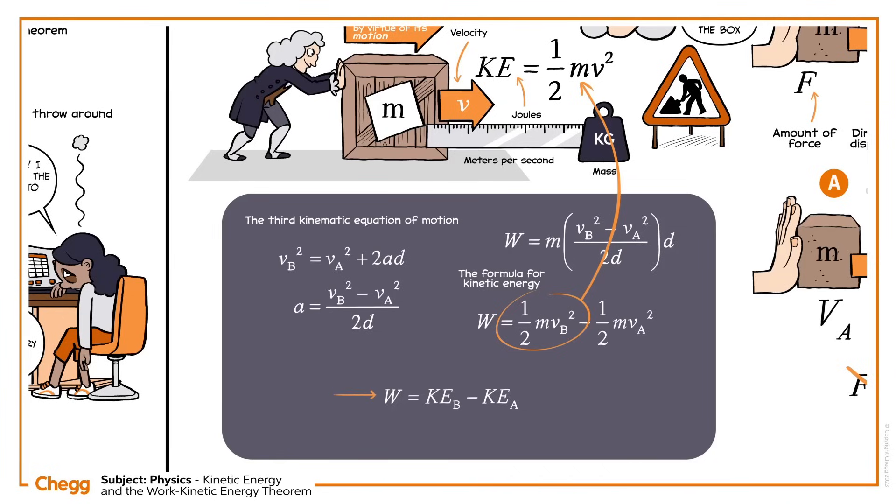Here, W represents the overall net work done on the object, not the work done by a single force. If the value of W is positive, the object will speed up. And if it's negative, the object will slow down. Friction forces do negative work. If the value was zero, no work was done on the object.